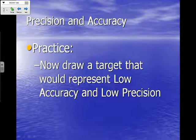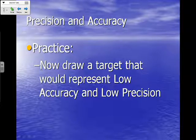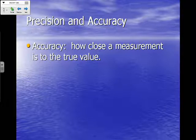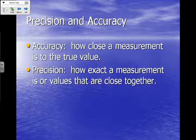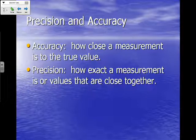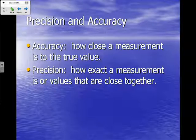Draw a target in your notes that would represent low accuracy and low precision. Now let's define accuracy: accuracy is how close a measurement is to the true value — how close you are to the bullseye. Precision can be looked at in two ways: it means how exact a measurement is (the further past the decimal you go, the more precise), and it can also mean when values are very close together, even if they're not accurate.